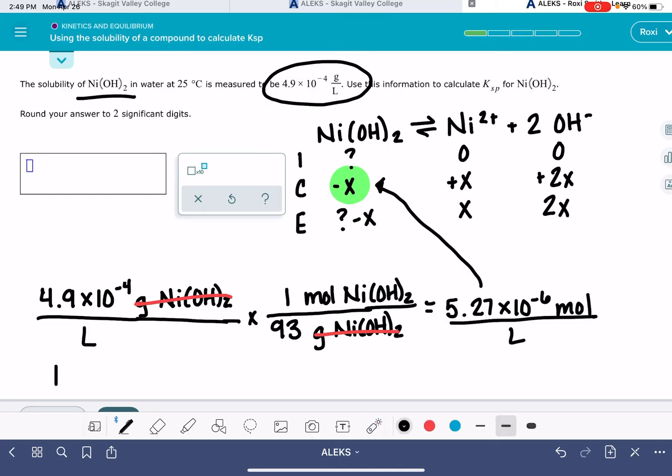Now the problem is asking us to calculate the KSP value, the equilibrium constant value. We should begin by writing an equilibrium expression. So that's going to be Ni2+ concentration times OH- concentration squared.